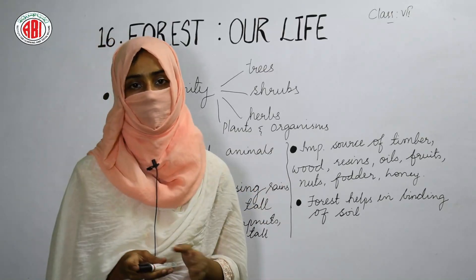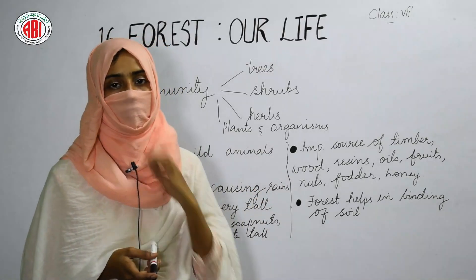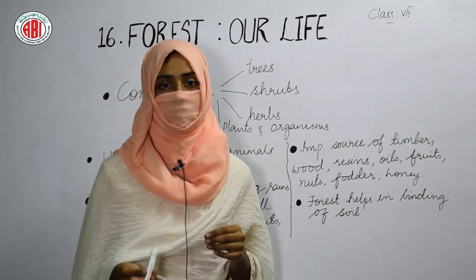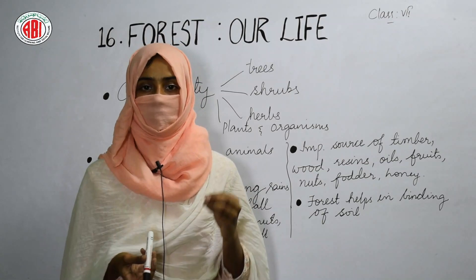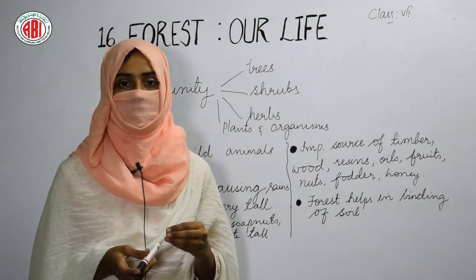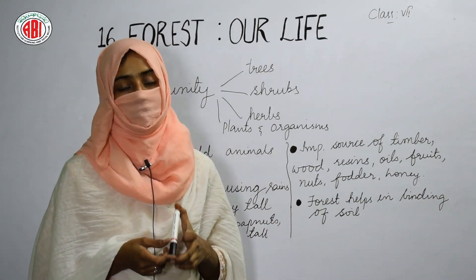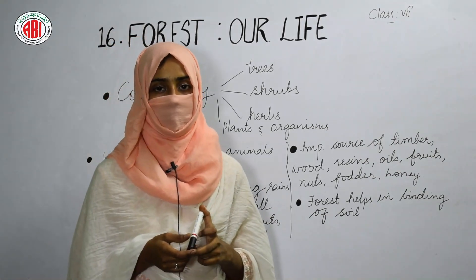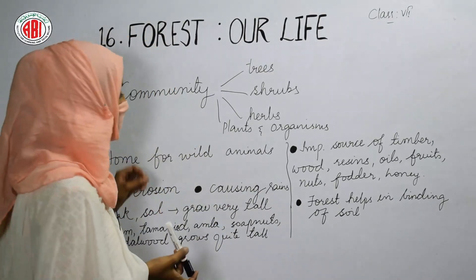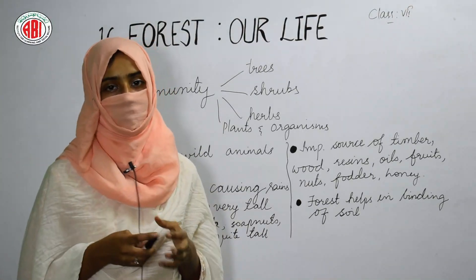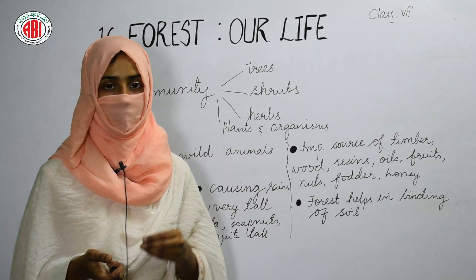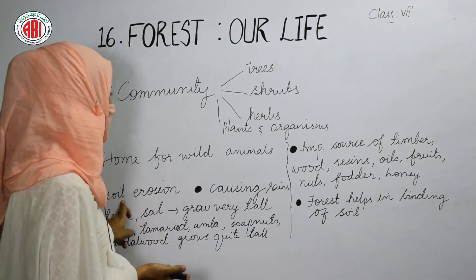Soil erosion means the removal of the topmost fertile layer of the soil. If the topmost layer is washed away by wind or water, we cannot grow crops there because the soil loses its fertility and the land becomes barren. Forest prevents soil erosion because the roots of trees bind the soil so the topmost layer cannot be washed away by wind or water.